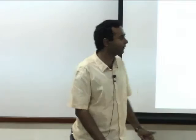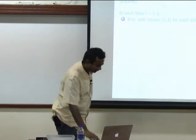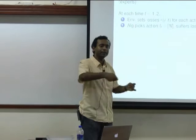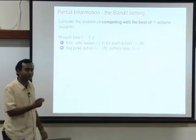These losses are set by the environment for all the actions possible at a given instant of time. They are not revealed to the forecaster. The forecaster has to pick an action i_t, which is one among the N actions. You have to basically decide as an agent which action to play at time t. The action that you play gives you the loss corresponding to that action at that time — you suffer that much amount of loss in that time step.